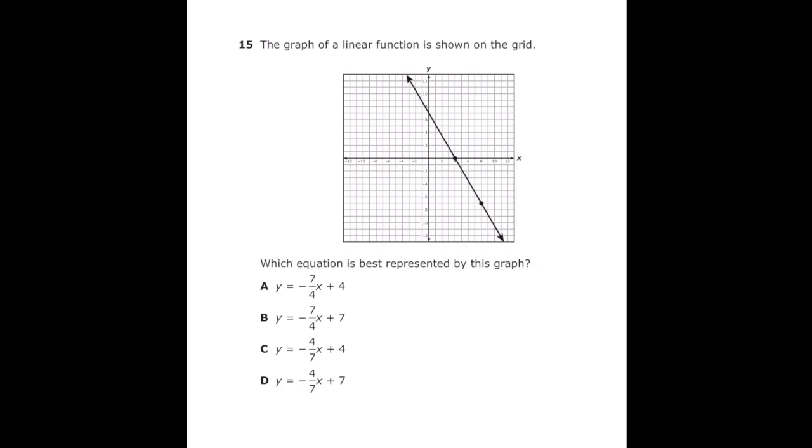The graph of a linear function is shown on the grid. Which equation is best represented by this graph? So the first thing I'm going to do is I'm going to find the y-intercept, and that's just going to be wherever the line crosses the y-axis. So if we look, we're going to see that the line crosses the y-axis at positive seven. So that means my y-intercept is positive seven.